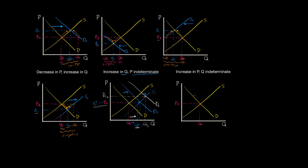Likewise, we may find ourselves in a situation in which the price will clearly increase to a new price PE1, but it will not be clear how the quantity changes. We might be in a situation where the new quantity is roughly the same as the original quantity. In order for this to occur, we must have a higher price but the same quantity. This would be the result of a situation in which both supply decreased — say to S1 — and demand increased to D1.